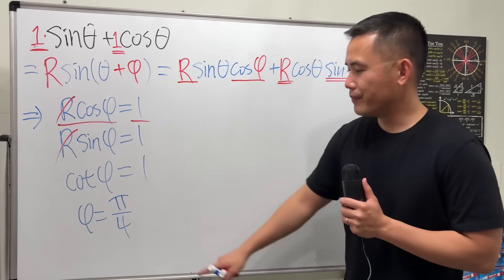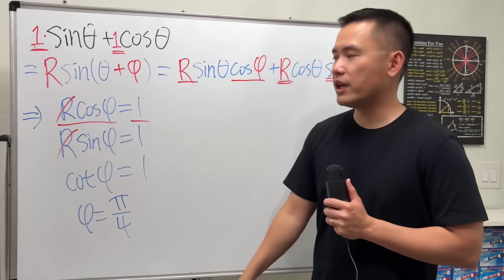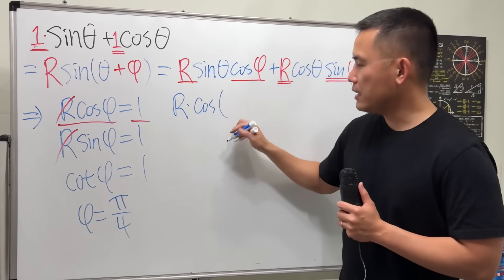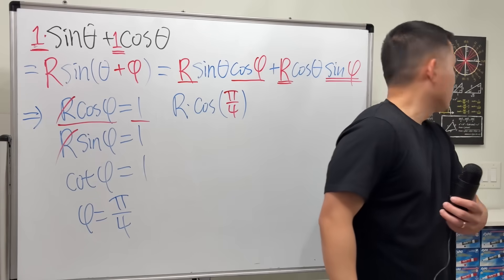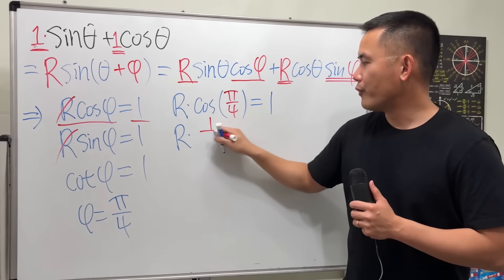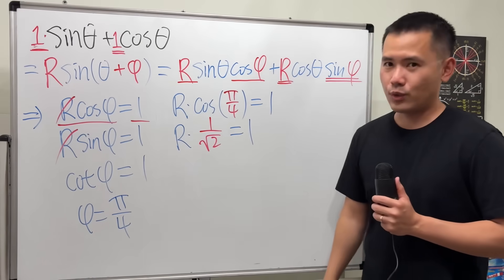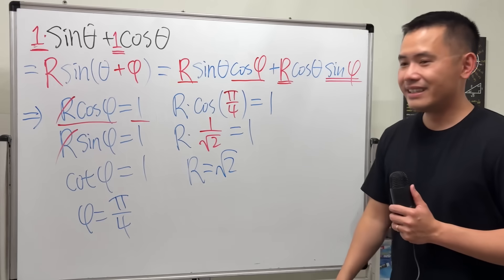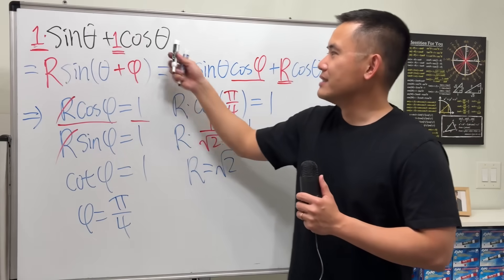Now how do we find the R though? We have phi already—just plug back into the first or the second equation. Let's do the first one: R times cosine phi, which is pi over four. Okay, this right here is one over square root of two. Now multiply both sides by square root of two. R is equal to square root of two.